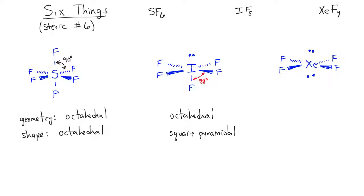In the case of XeF4, we have two lone pairs of electrons. When placing the two lone pairs, we put them directly across from each other so they are as far apart as possible. It doesn't matter which two opposite positions they occupy, as long as they are not next to each other. This causes the bond angles between fluorines to return to 90 degrees. The molecule is actually planar — flat. So when we consider the electron pairs, the geometry is octahedral, but the shape is called square planar.